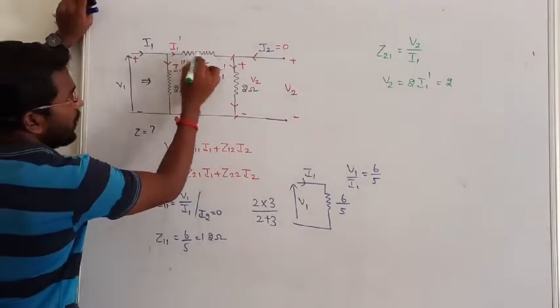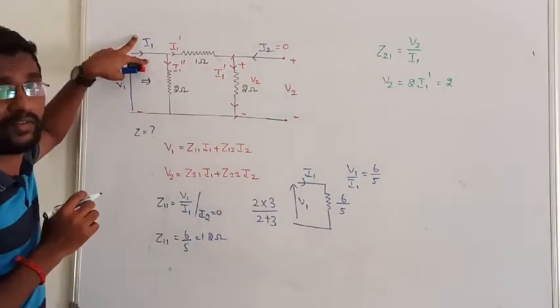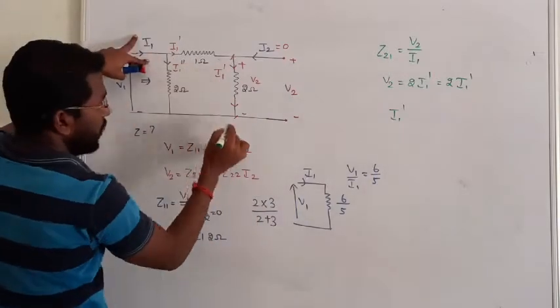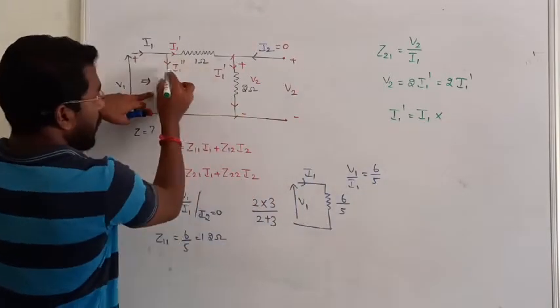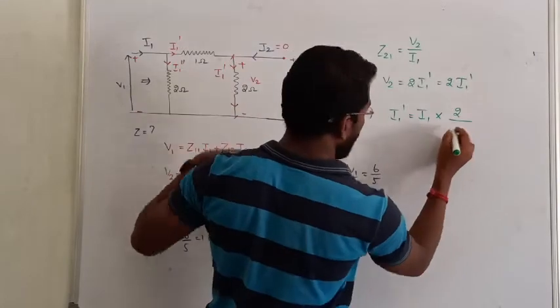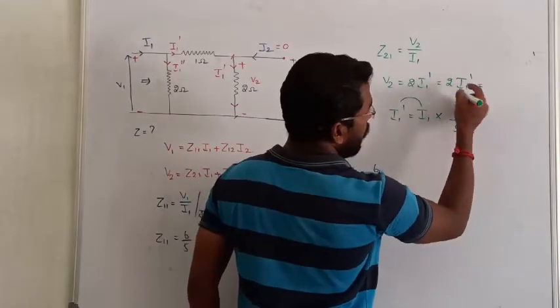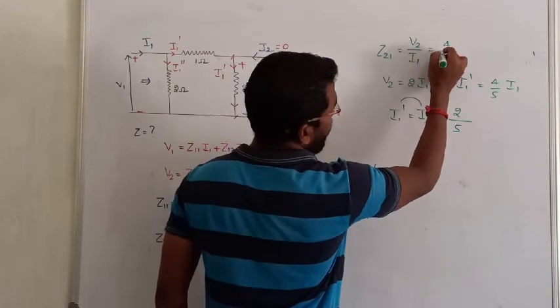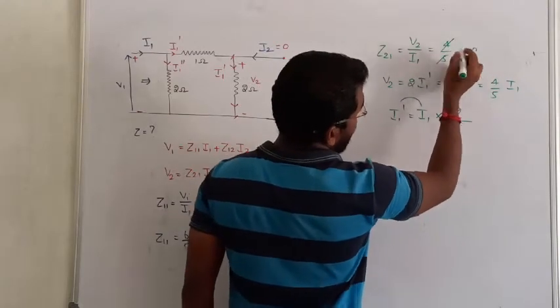In the branch parallel, we have total supply current I1. We apply current division rule. Since we have I1 dash here, according to current division rule, total supply current I1 into opposite branch resistance lies in the numerator divided by total resistance in the denominator, 2 plus 2 plus 1, totally 5. So we get 4 by 5 into I1.